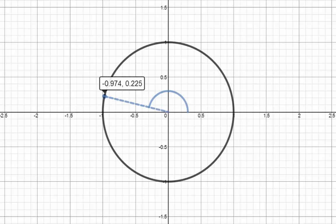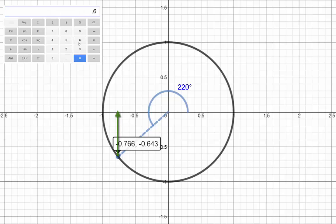In the third quadrant, the gradients are all positive here. For instance, tan 220 degrees, the rise is 0.643, and the run is 0.766, so the gradient is 0.84.